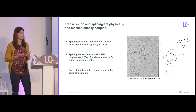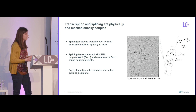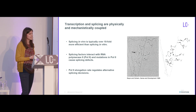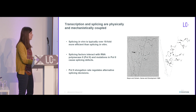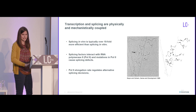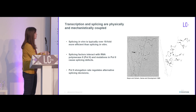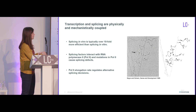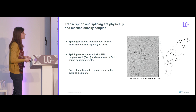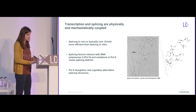We also know that splicing is actually happening during transcription. I'm showing an electron micrograph on the right here — these are genes from a Drosophila embryo. DNA is on the vertical axis, and RNA is being transcribed off the DNA. Loops are forming within this RNA, and these are introns that are in the process of being spliced. So we can see that splicing here is really co-transcriptional.